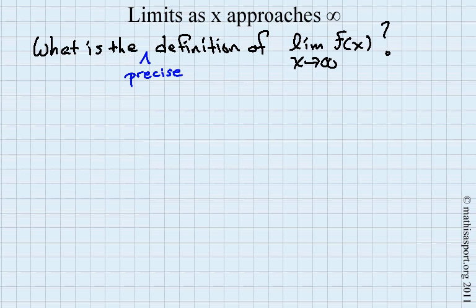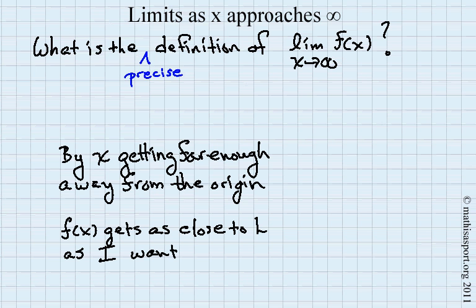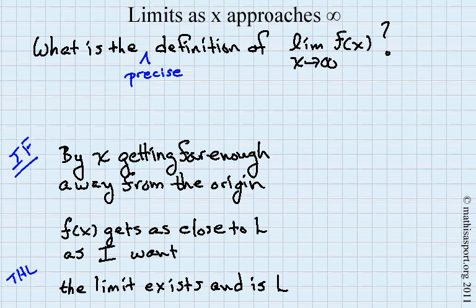Well, it turns out to not be all that complicated. Just a way of describing it in words is to say that if I can get x far enough away from the origin so that f of x gets as close to L as I want it to, then I have a limit. Let's add just a little bit more precision to that. What we're really saying is if by getting x far enough away from the origin, f of x gets as close to L as I want it to be, then we will say that the limit exists and the limit is L.